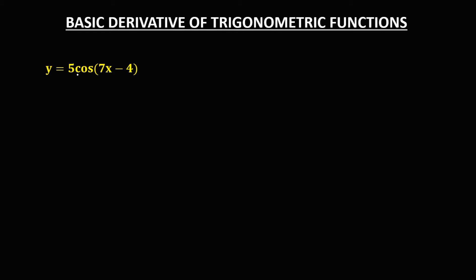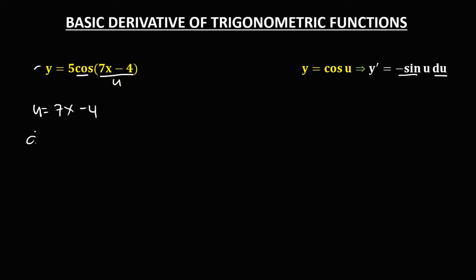For the next given, the derivative of cosine is negative sine(u) times the derivative of u. For this given, u is 7x − 4. The derivative of 7x is 7, and the derivative of 4 is 0, so du equals 7.